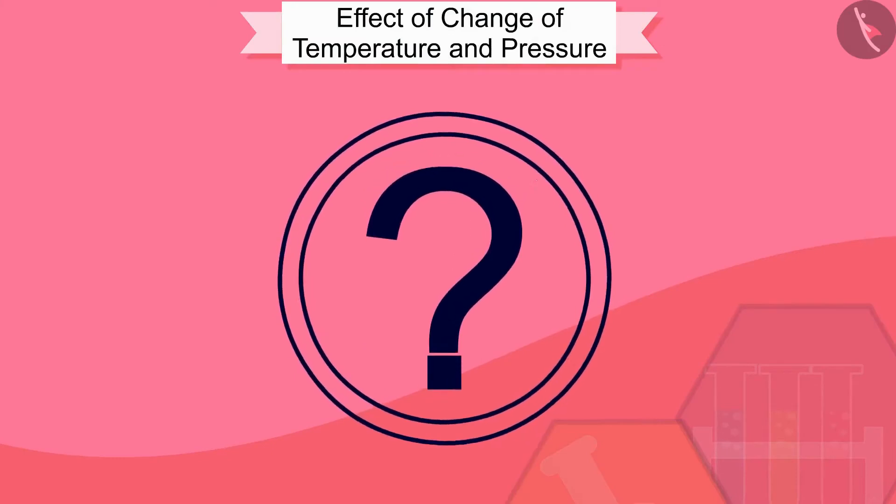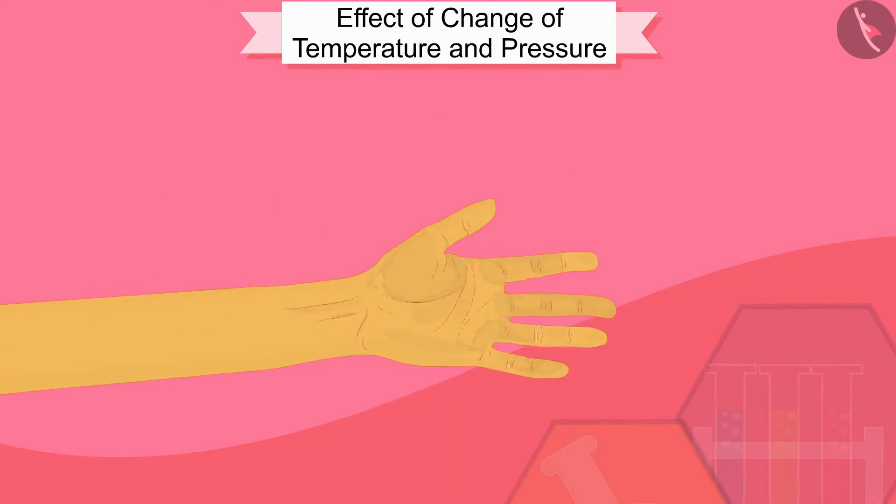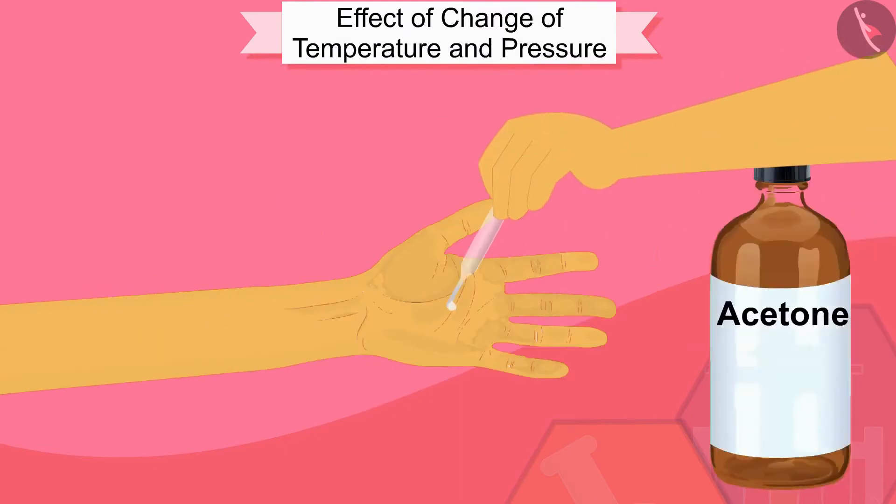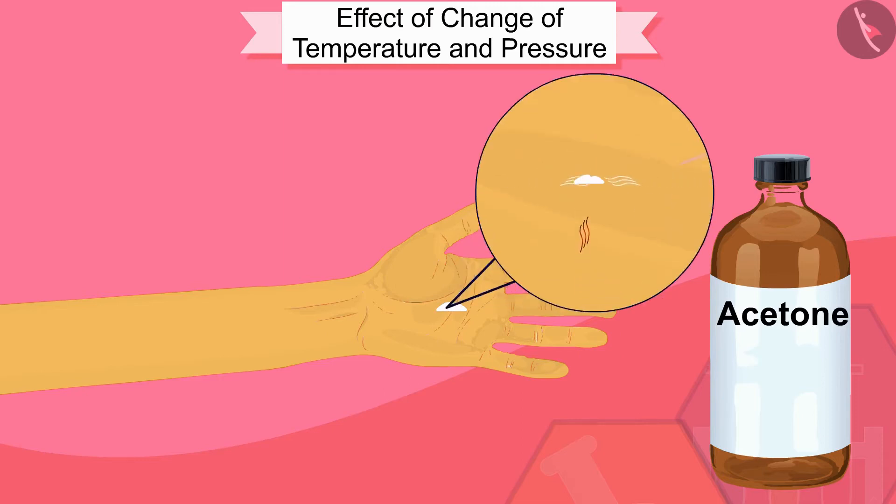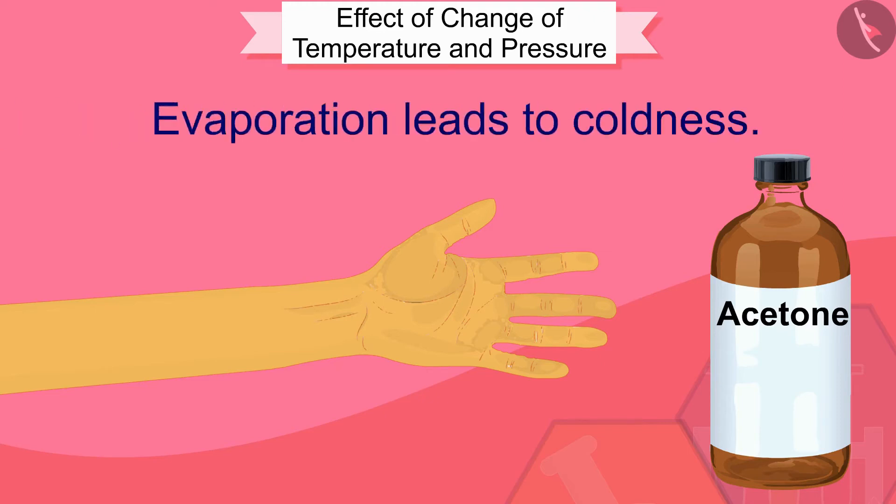Do you know another interesting thing about evaporation? Have you ever poured a few drops of acetone on your palm? You must have felt cold on the palm. It is also caused by evaporation. Acetone particles receive energy from your palm and its surroundings and evaporate. Because of which, you feel coldness on the palm. In this way, we can see that evaporation leads to coldness.